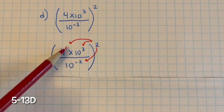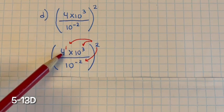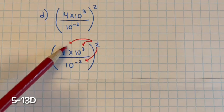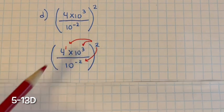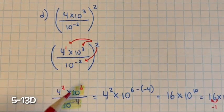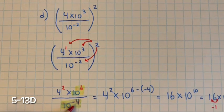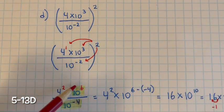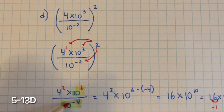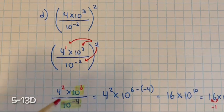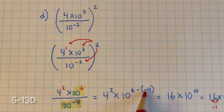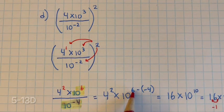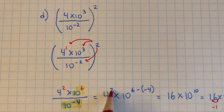For 4, I put a placeholder of 1 for the exponent, because 4 to the 1st power is 4. When you raise a power to a power, you multiply them: 1 multiplied by 2 is 2; 3 multiplied by 2 is 6; and 2 multiplied by negative 2 is negative 4. You can't have a negative exponent, so we take the reciprocal, bringing it up into the numerator. Another way is to apply the division rule: we have 10 and 10, with 6 minus negative 4, which is 6 plus 4 equals 10. And we have 4 squared, which is 16.